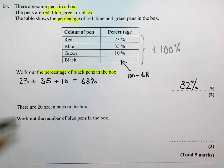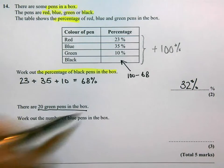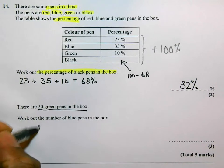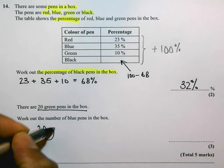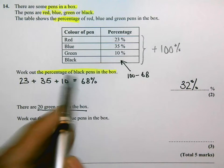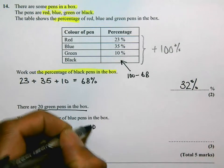Now, the next one says there are 20 green pens in the box. So 20 green. Okay, and the green pens, that's 10% of the box.